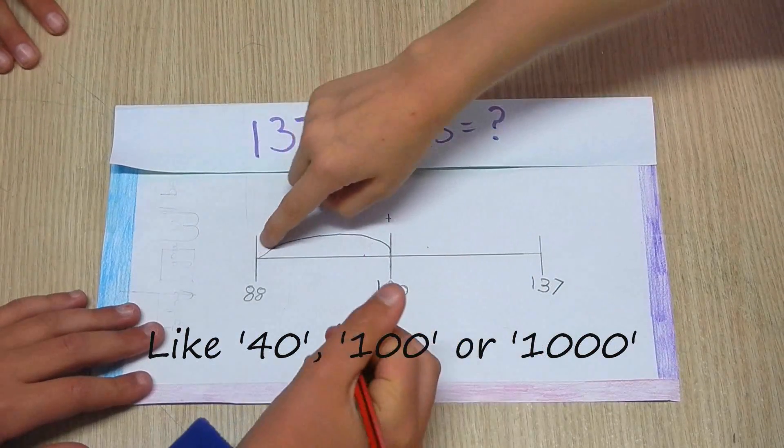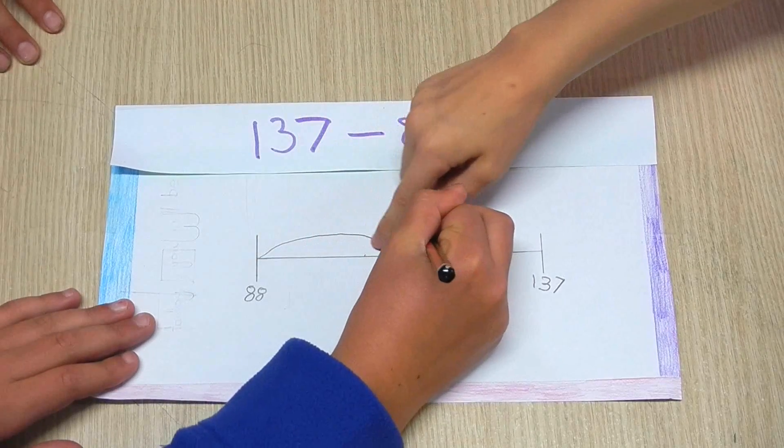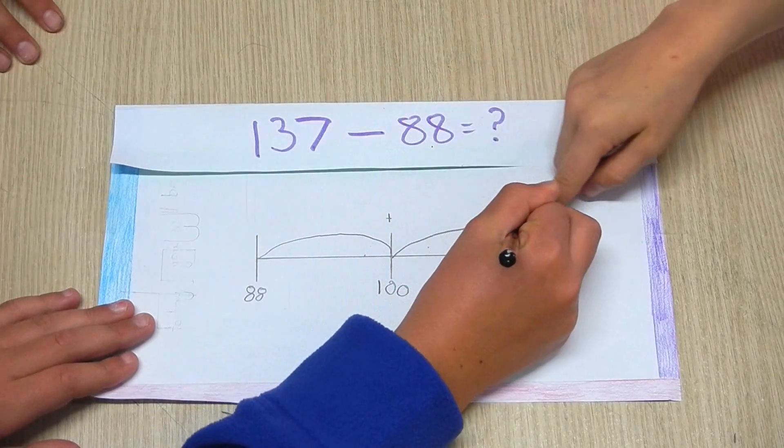Then you'll do two giant leaps from 88 to 100 and 100 to 137.